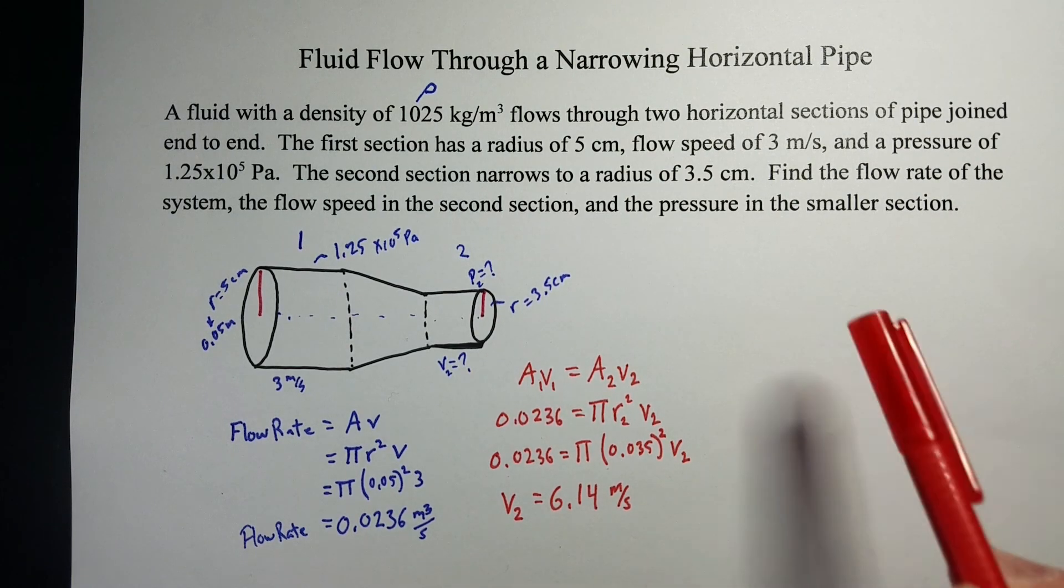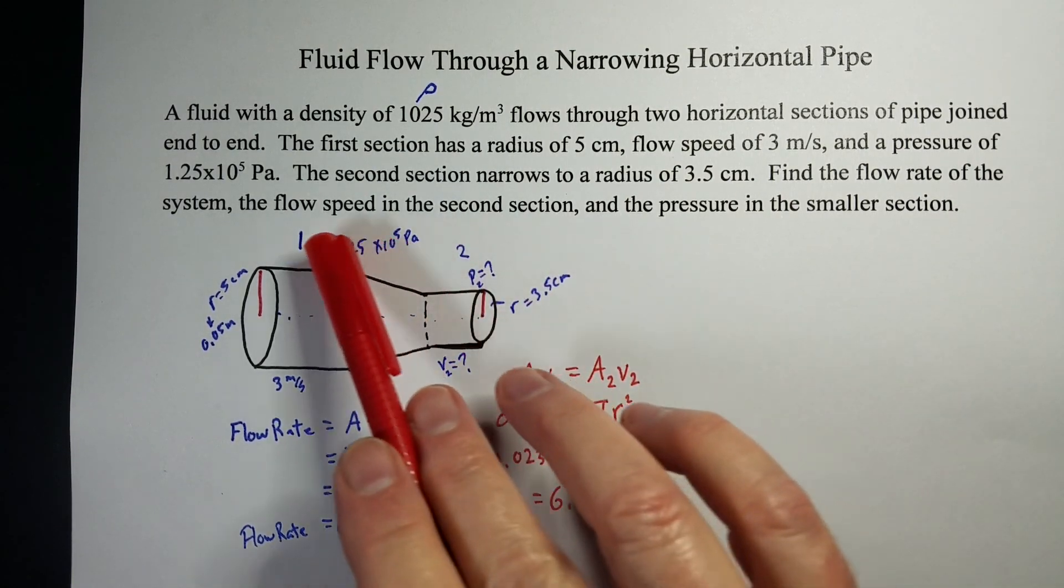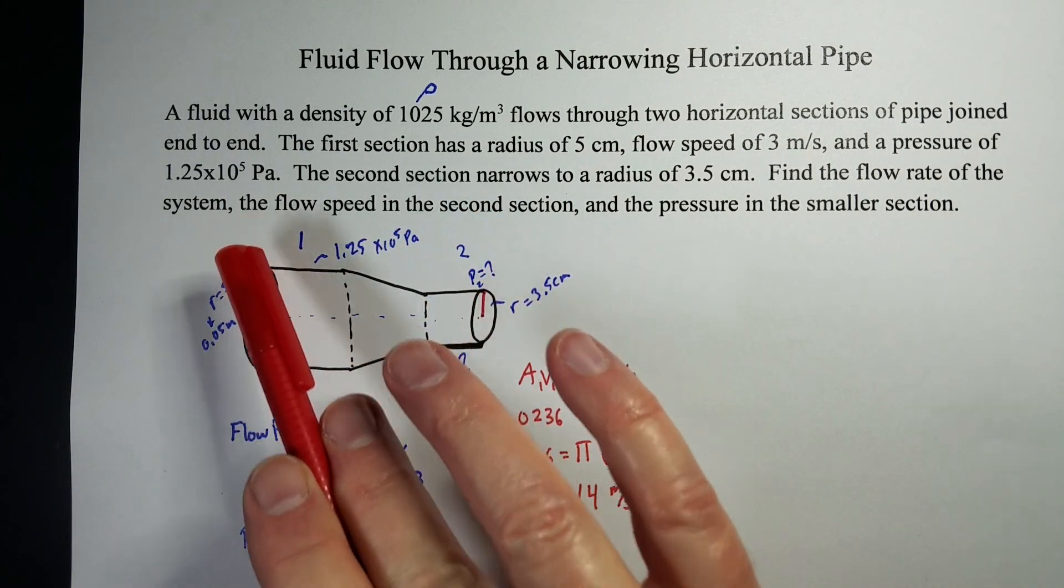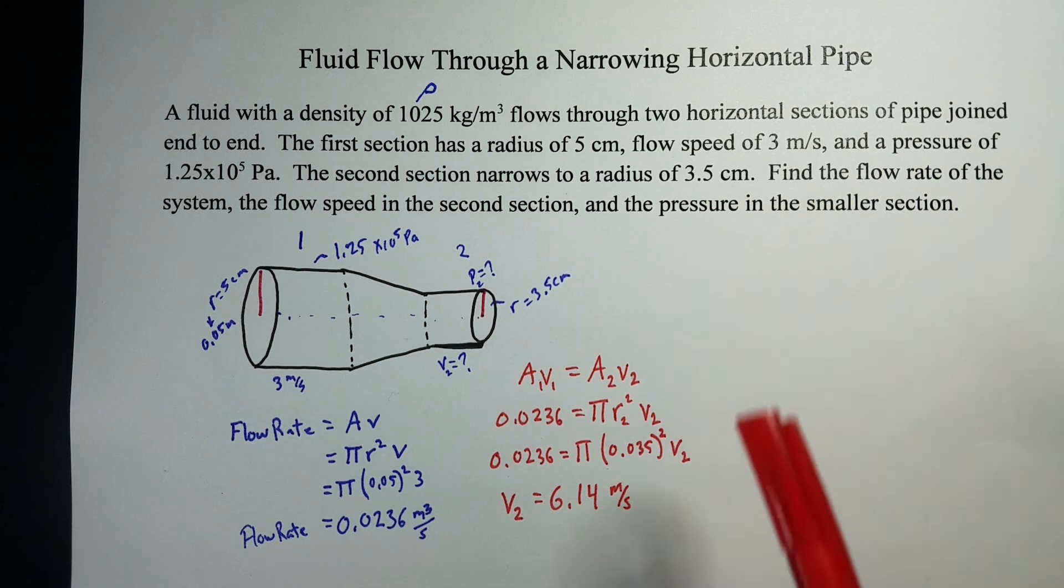To finish things off, we need to know, we've got the flow speed, we've got the flow rate of the system, we've got to figure out the pressure. So, for that one, we need to use Pascal's principle.